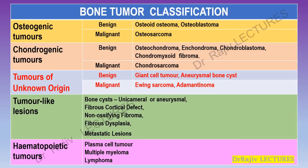Bone tumors are classified according to the tissue of origin or the matrix they produce. The rest are grouped by clinical pathologic features. The majority of benign and malignant primary bone tumors are cartilaginous, meaning they produce cartilage. Most primary bone tumors are benign. Metastatic tumors are more common than primary tumors.